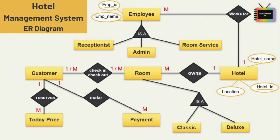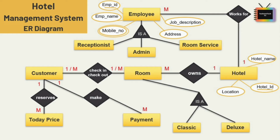Next for employee: employee name, job description, and contact number. We have used a multi-valued attribute for contact number because one user can have various contact numbers. The last employee attribute is address. For the entity room, I am adding three attributes: room number, room type, and room status — and room number is the key attribute.